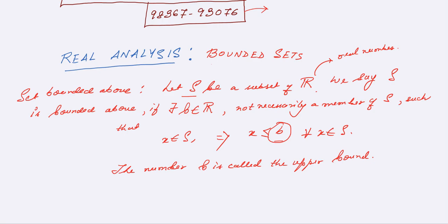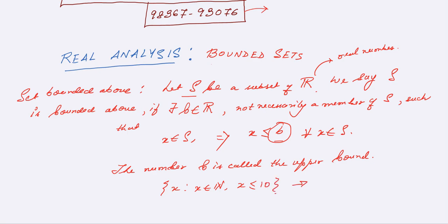So let's say we have the set of natural numbers x such that x belongs to N and x is less than or equal to 10. So an upper bound may be 11, or 12, or 13 — whatever. These numbers like 11, 12, 13 are not necessarily members of the set S, yet they are called upper bounds.